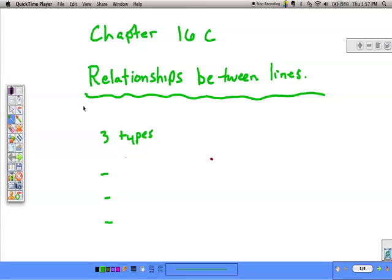Section C of Chapter 16 covers lines in parametric and vector form and their relationships. We have three types of coplanar lines—lines in the same plane. We could have intersecting lines, parallel lines, or coincident lines, meaning the same line.